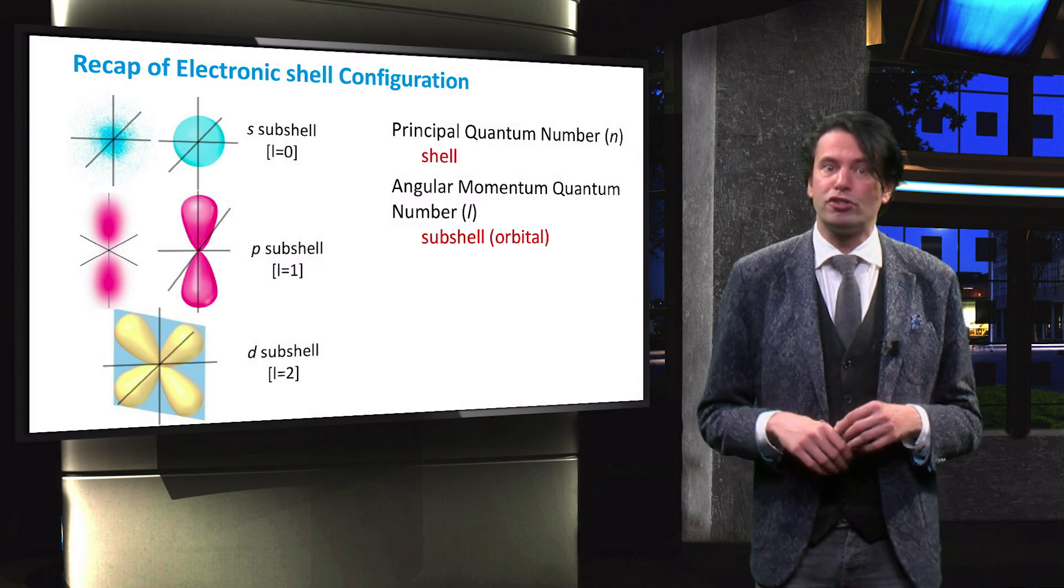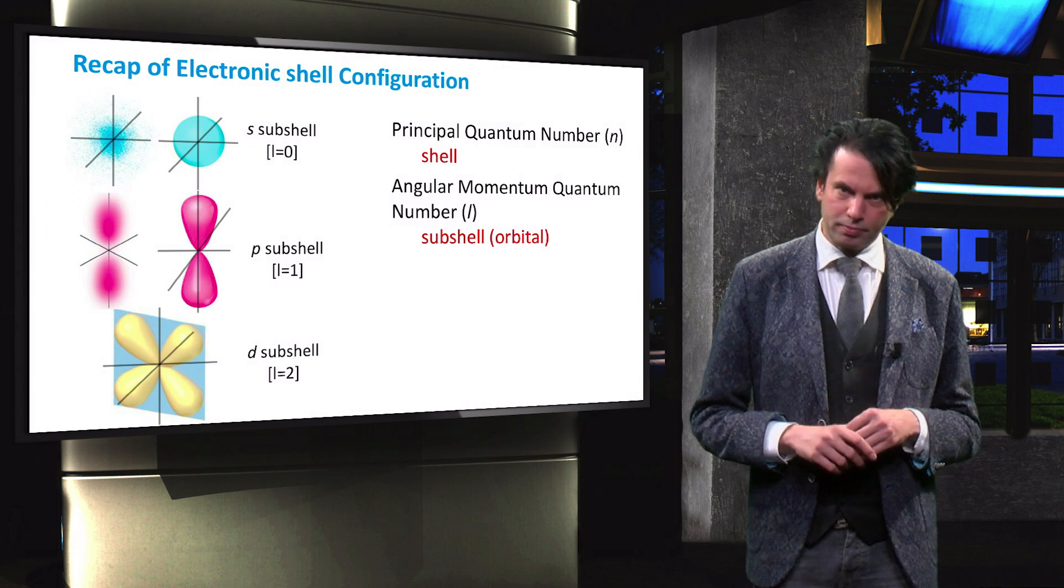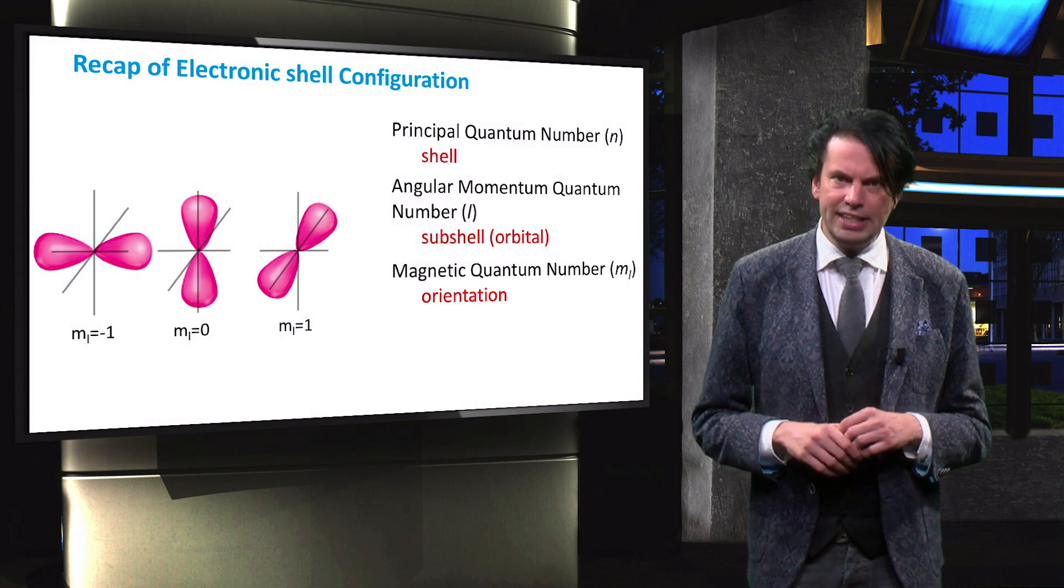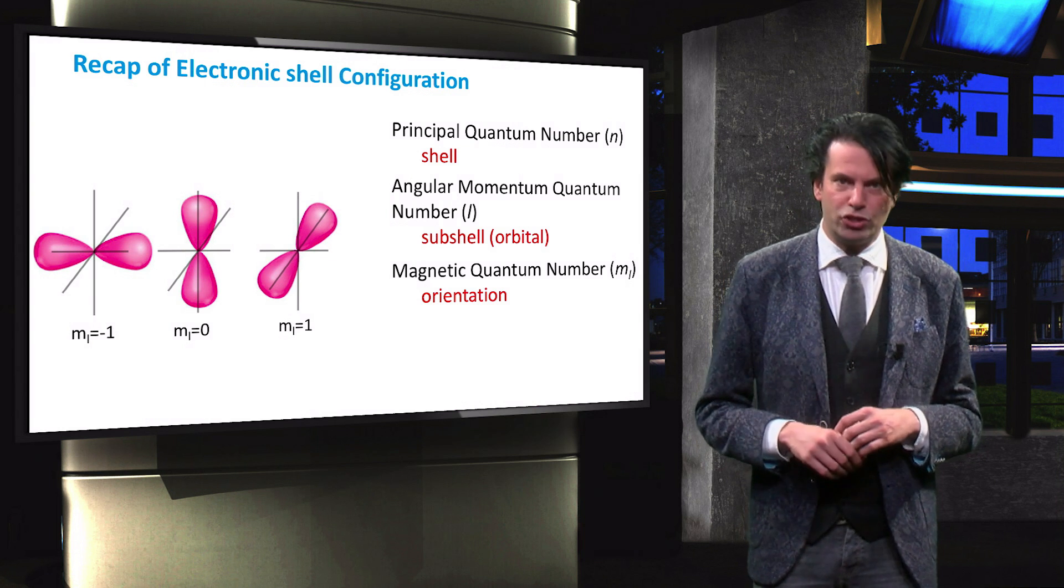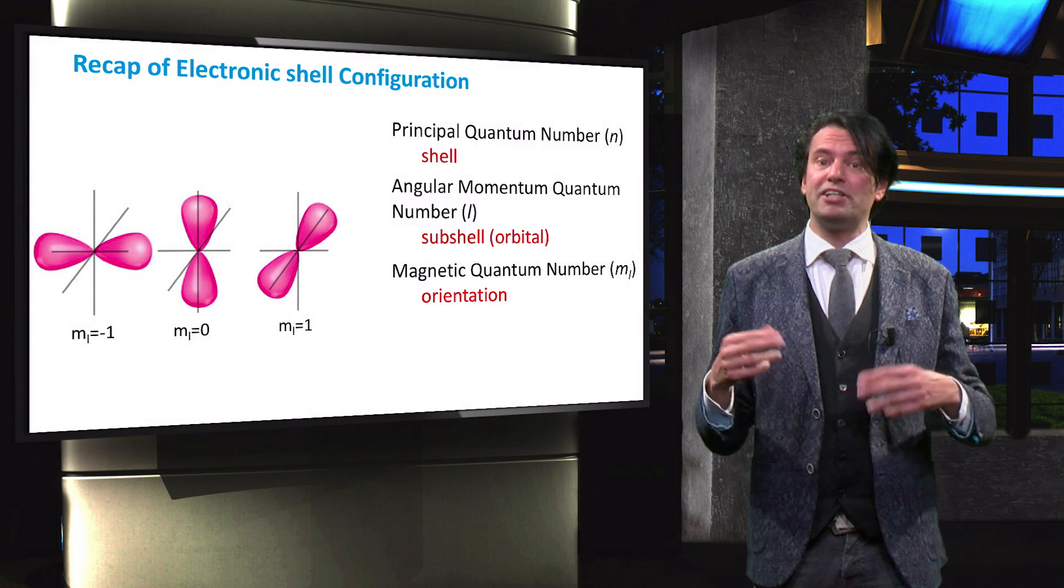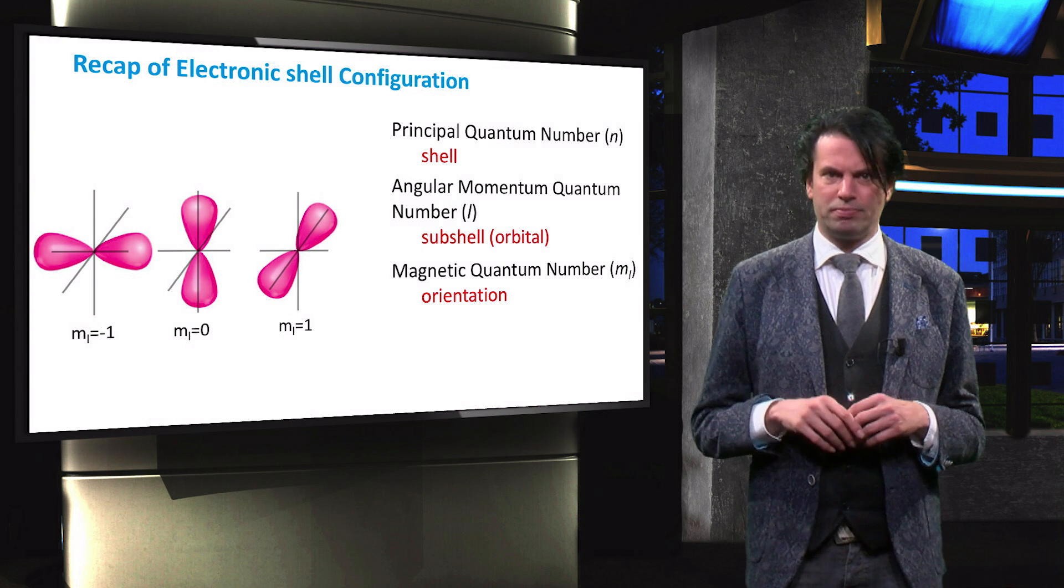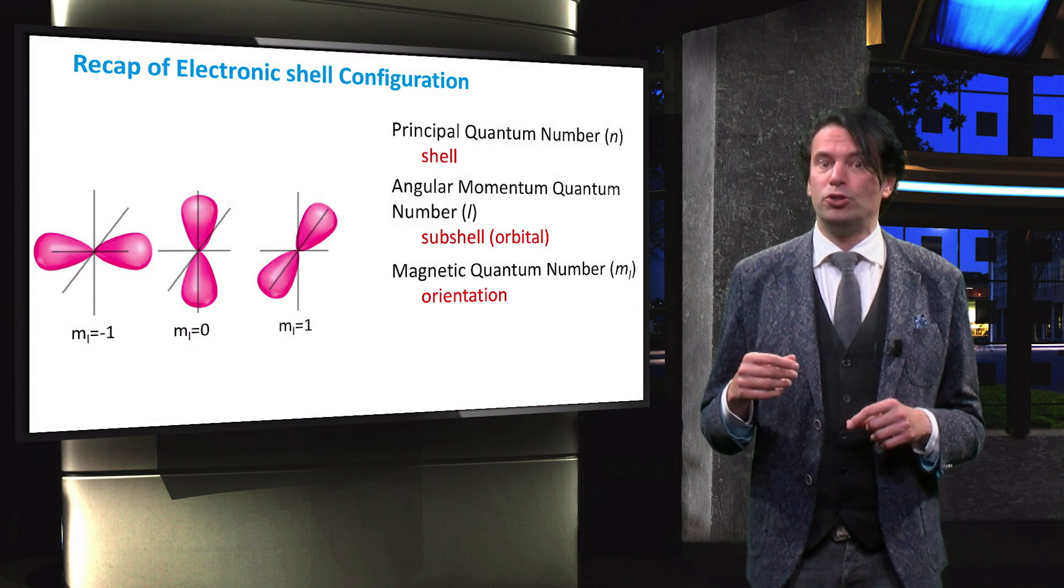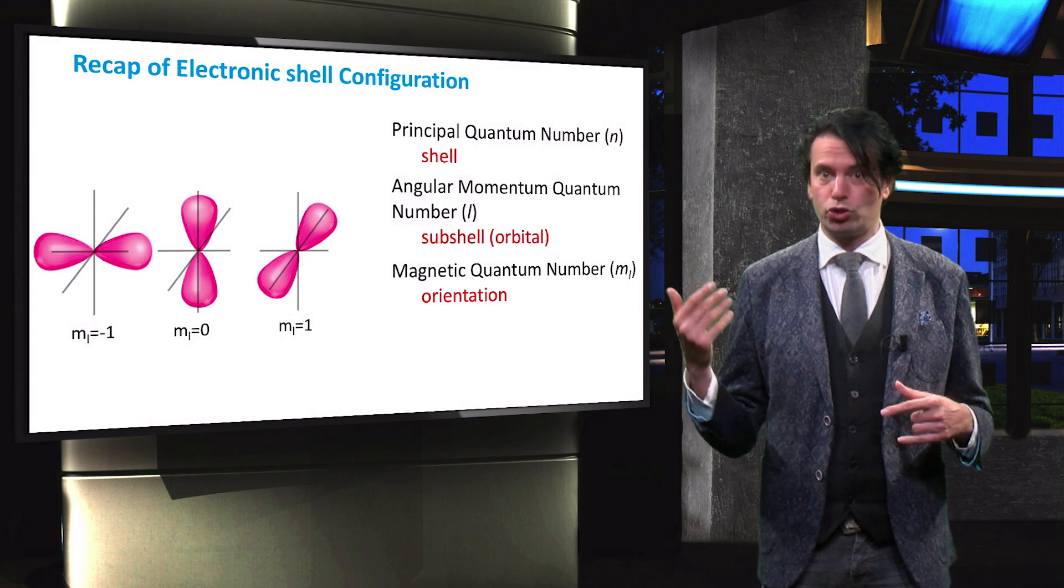The orientation of the orbitals is further defined by the magnetic quantum number ml. We can see that there are three different orientations for the orbital in the second subshell. The magnetic quantum number ranges from minus l to plus l, including zero. This results in a maximum number of 2l plus 1 orientations per subshell.